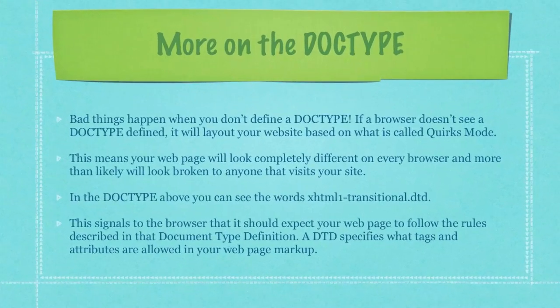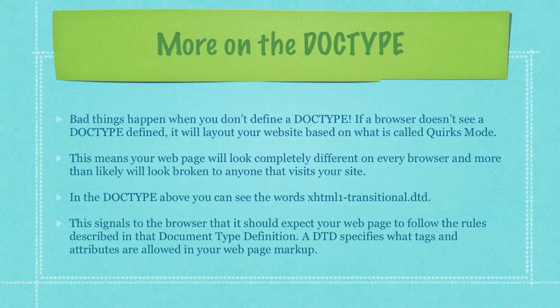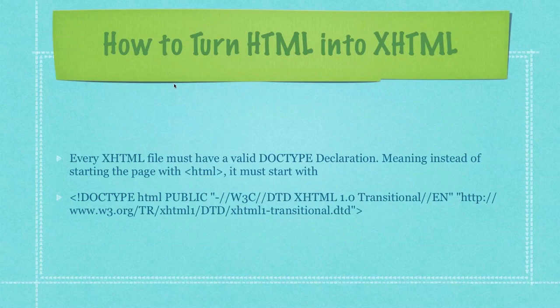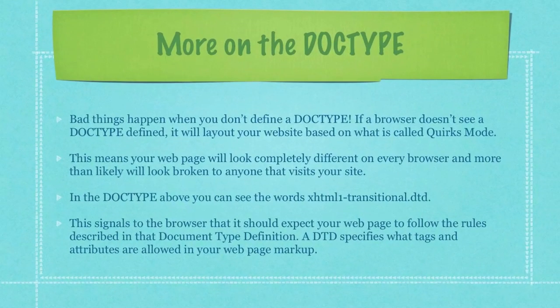Bad things happen when you don't define a doctype. If a browser doesn't see a doctype defined, it will lay out your website based on what is called Quirks Mode. This means your webpage will look completely different on every browser and will more than likely look broken to anyone that visits your site. In the doctype above, you can see the words XHTML1-Transitional.dtd — here is a transitional tag that I'm talking about. This signals to the browser that it should expect your webpage to follow the rules described in that document type definition.